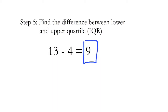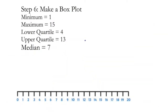So that's how you find the IQR interquartile range. There were five steps to that, but there's one more thing we can do with this information — it's called making a box plot, so let's call that step number six. For step number six, we need all the information we found earlier: the minimum, the maximum, lower quartile, upper quartile, and median.